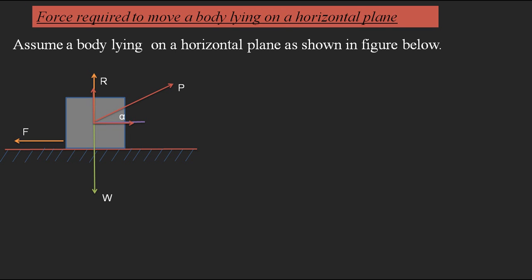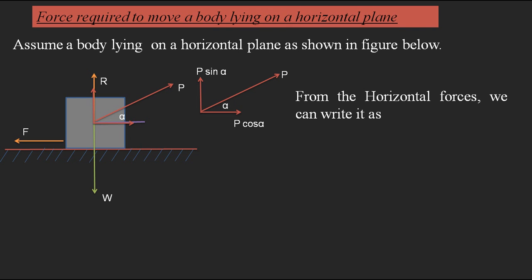The two components are: one parallel to the plane and another perpendicular to the plane, which is along the normal reaction and the weight of the body. For convenience I have represented these components separately. The horizontal component is P cos alpha and the vertical component is P sin alpha. Now analyzing the horizontal forces acting on the body: the frictional force F acts opposite to the horizontal component of P.